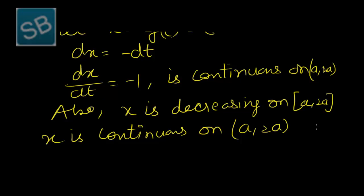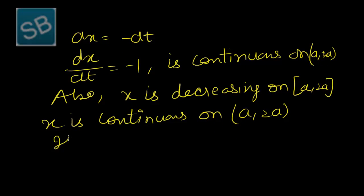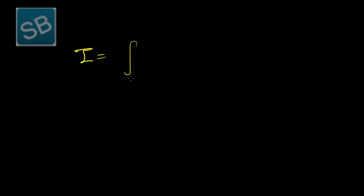Now we find the new limits. When x = a, we solve 2a minus t = a to get t = a. When x = 2a, we get t = 0. So making all these substitutions, I equals the integral from a to 0 of f(2a minus t) times (minus dt).